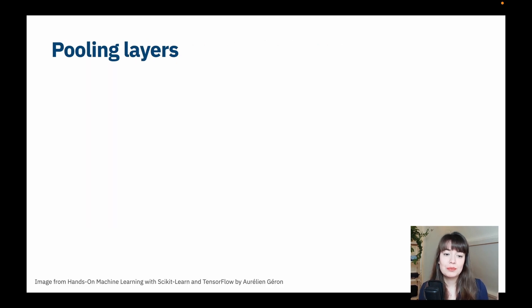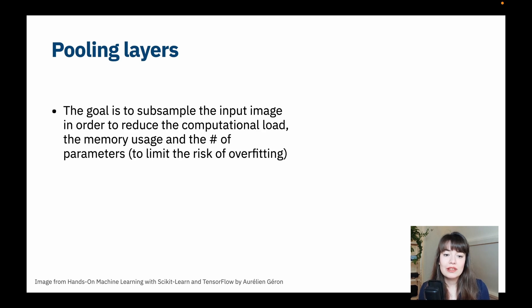Next up is the pooling layers. So pooling layers have the goal to subsample the input image in order to reduce its size. So they do not have any weights in there. They do not have anything that needs to be trained or updated. Their only goal is to make the images a little bit more easy to deal with so that we have less computational load, less memory usage, and less number of parameters at the end of the day. So it also helps with overfitting.